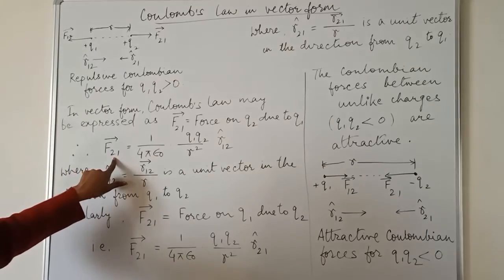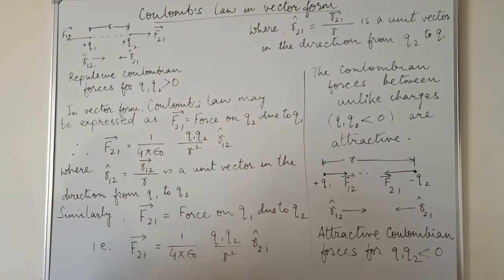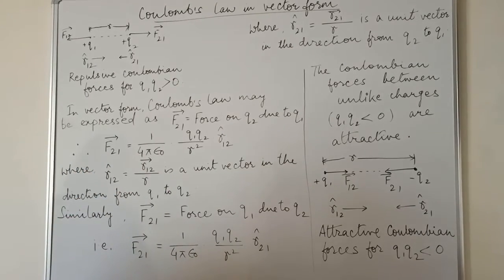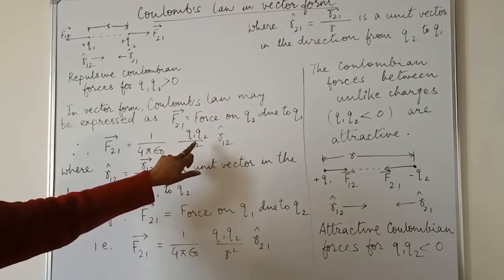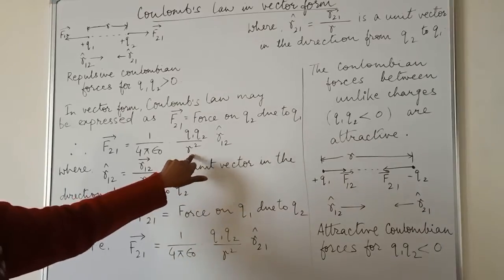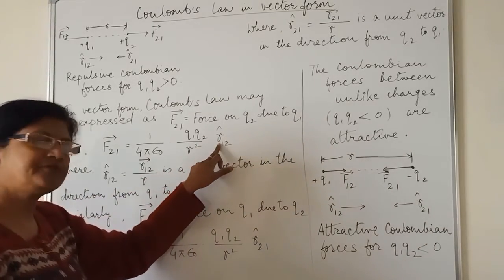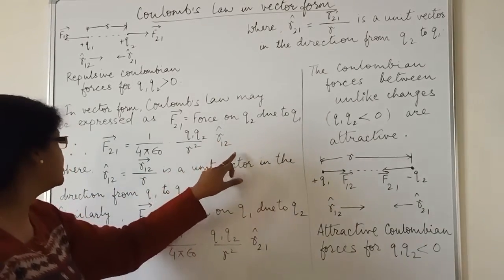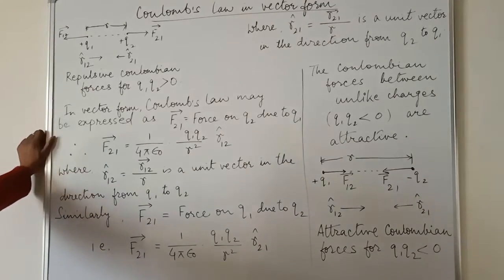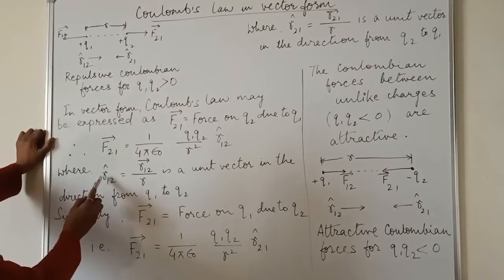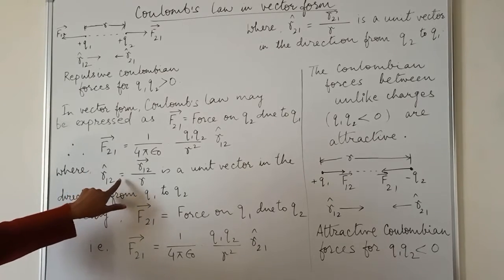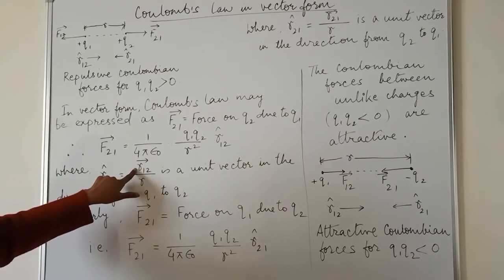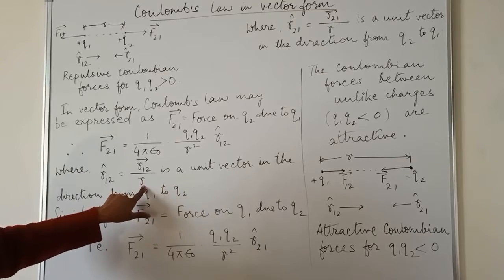So we can write F21 is equal to 1 upon 4 pi epsilon naught into Q1, Q2 upon R square into unit vector R12. Here you see unit vector R12, R cap 12 is equal to R12 upon R.